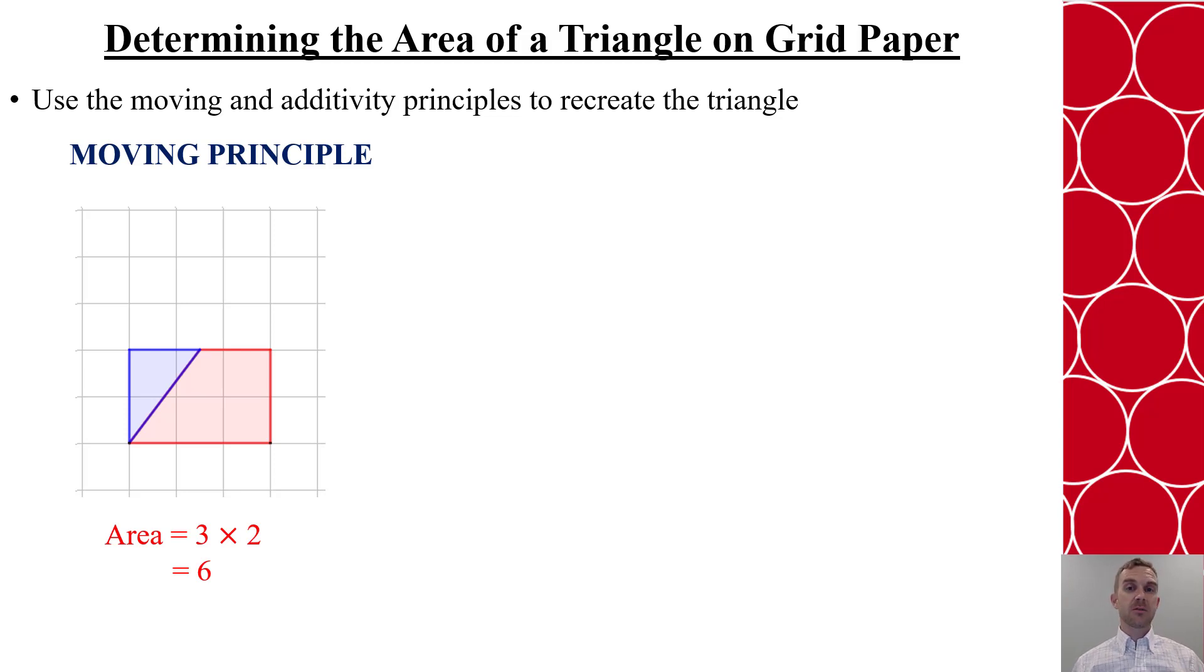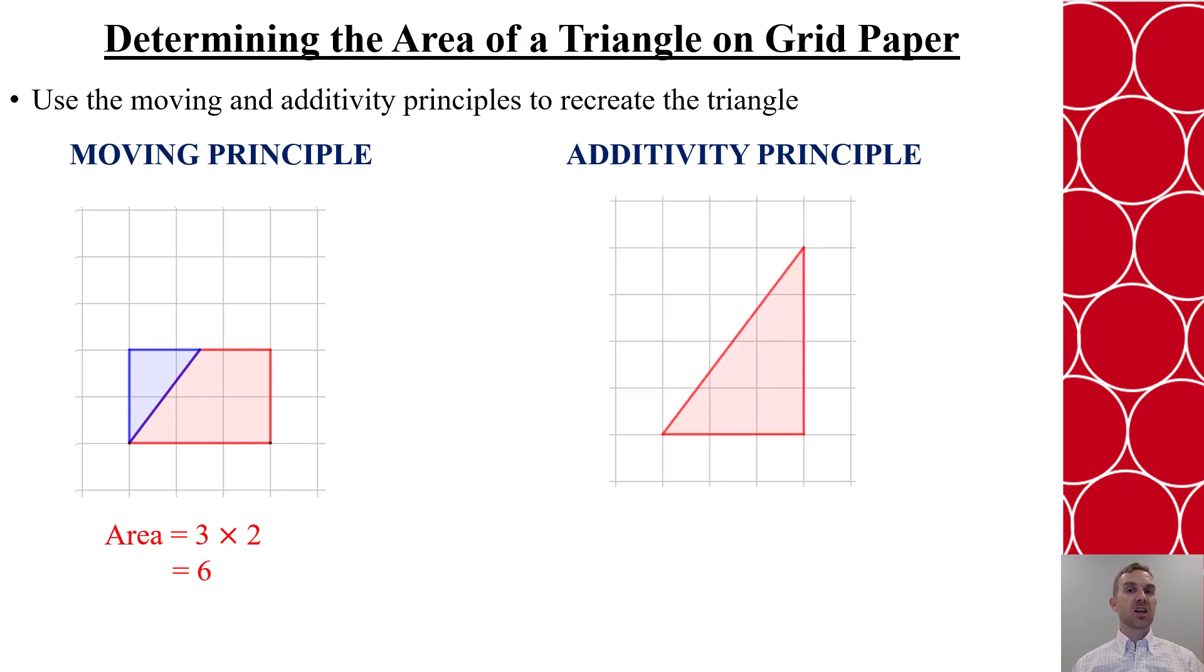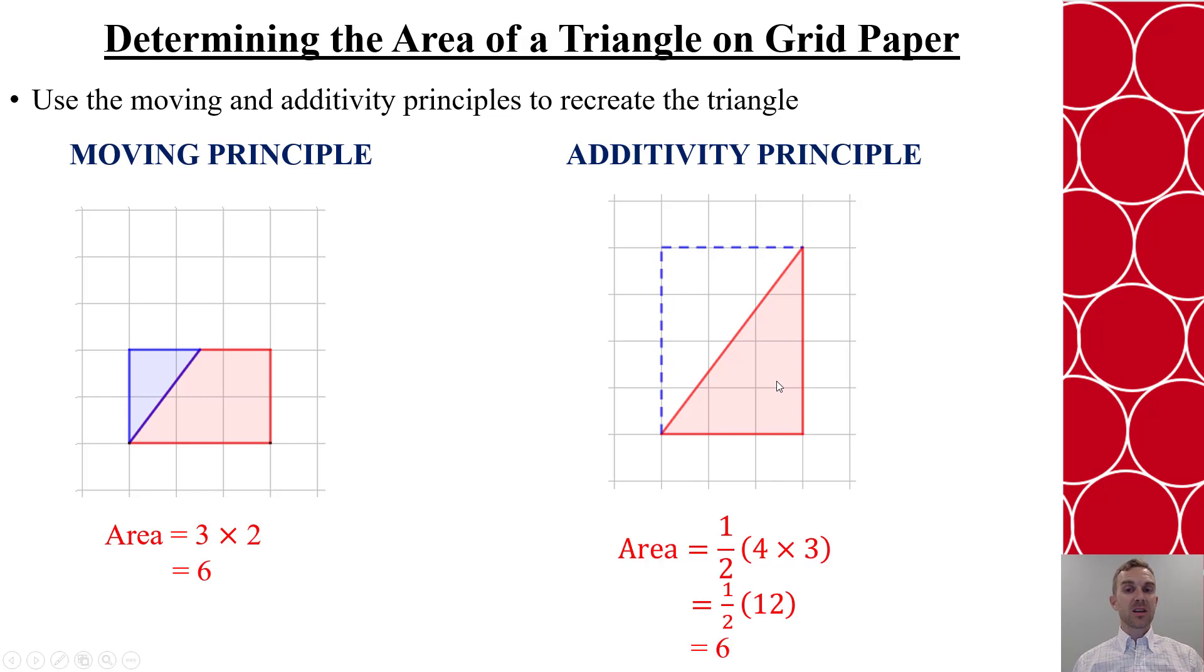I can also think about it from an additivity principle standpoint, where instead of adding parts, I could make a larger shape and subtract what doesn't exist. If I take that same triangle and extend out from the two vertices to make it a rectangle, I can say how much of this rectangle is filled in? It's half of it. So one half of 3 by 4 or 4 by 3 will give me the 6 units.